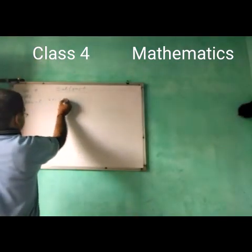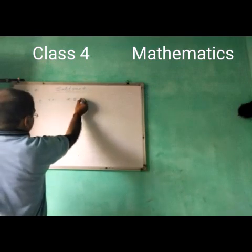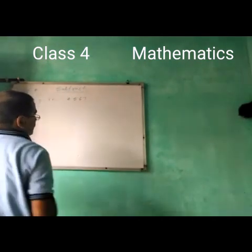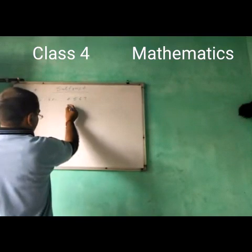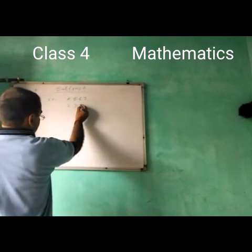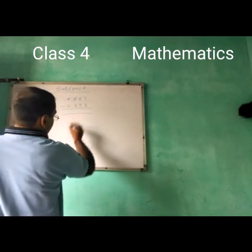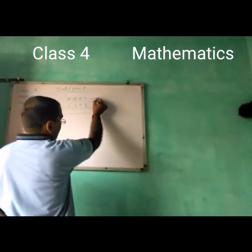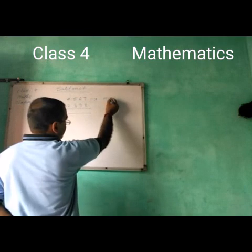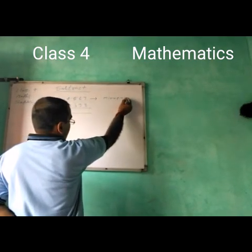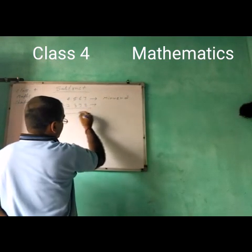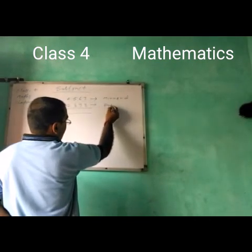Example: 4567 minus 2398. Here, 4567 is my number, and 2398 is Subtrahan.